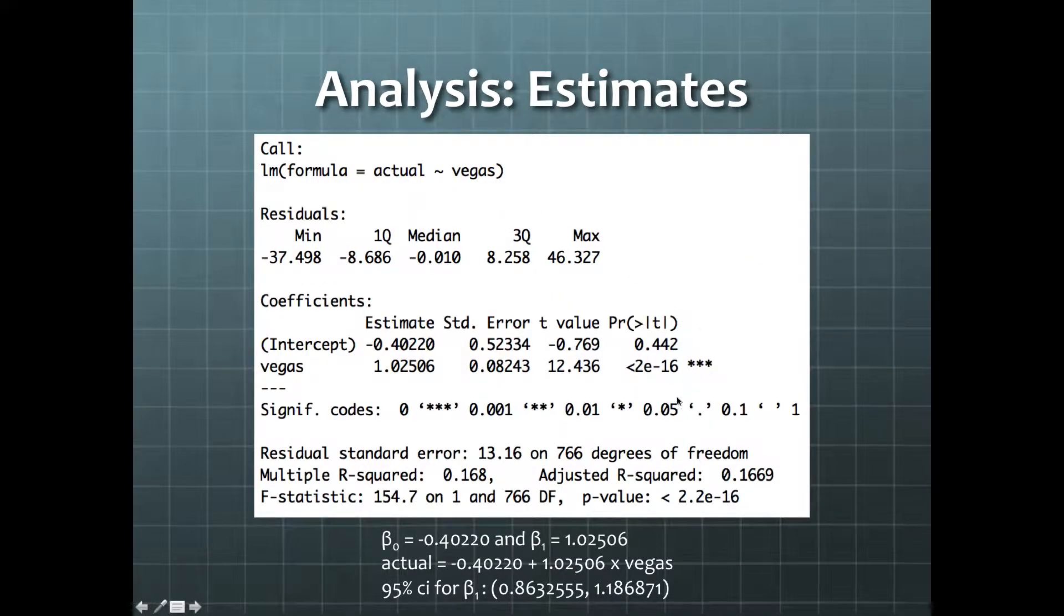Here's the summary information of the linear model. From here, we get our parameter estimates for beta0 and beta1. From these estimates, we can write the equation of the fit line, which is down here.